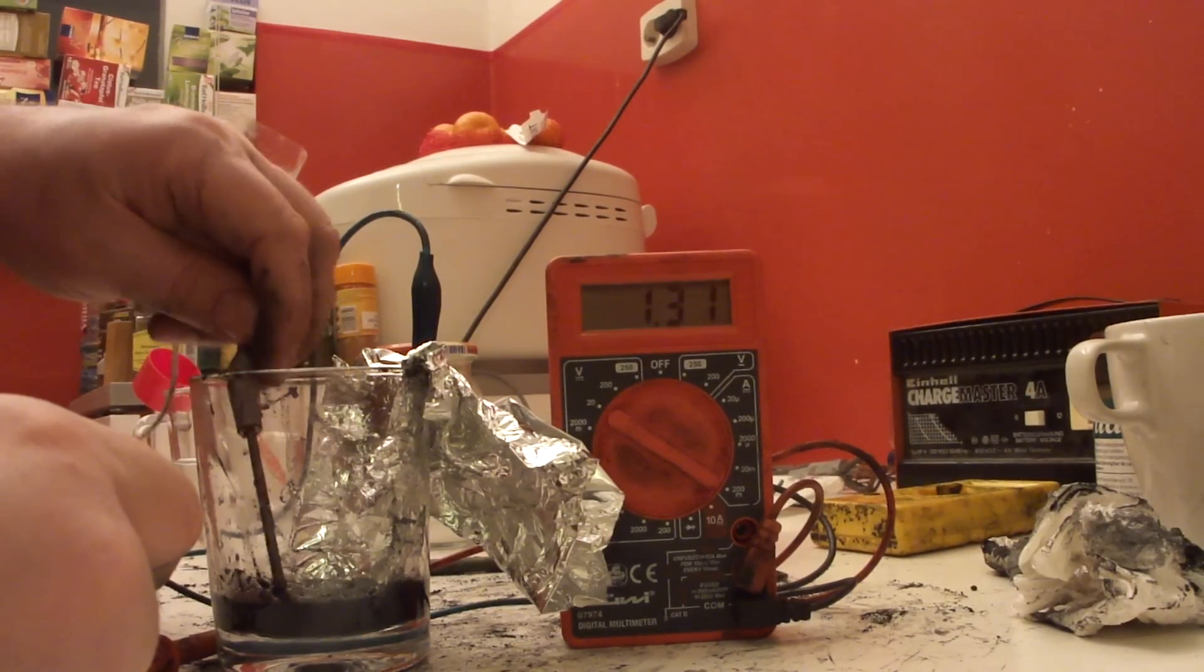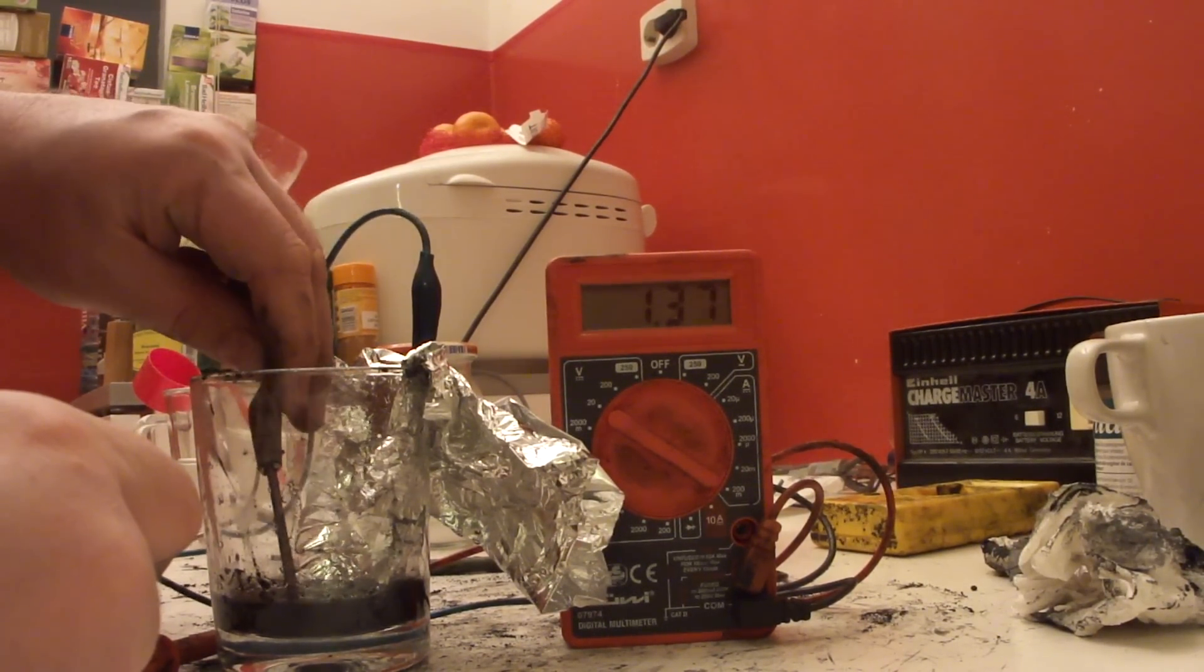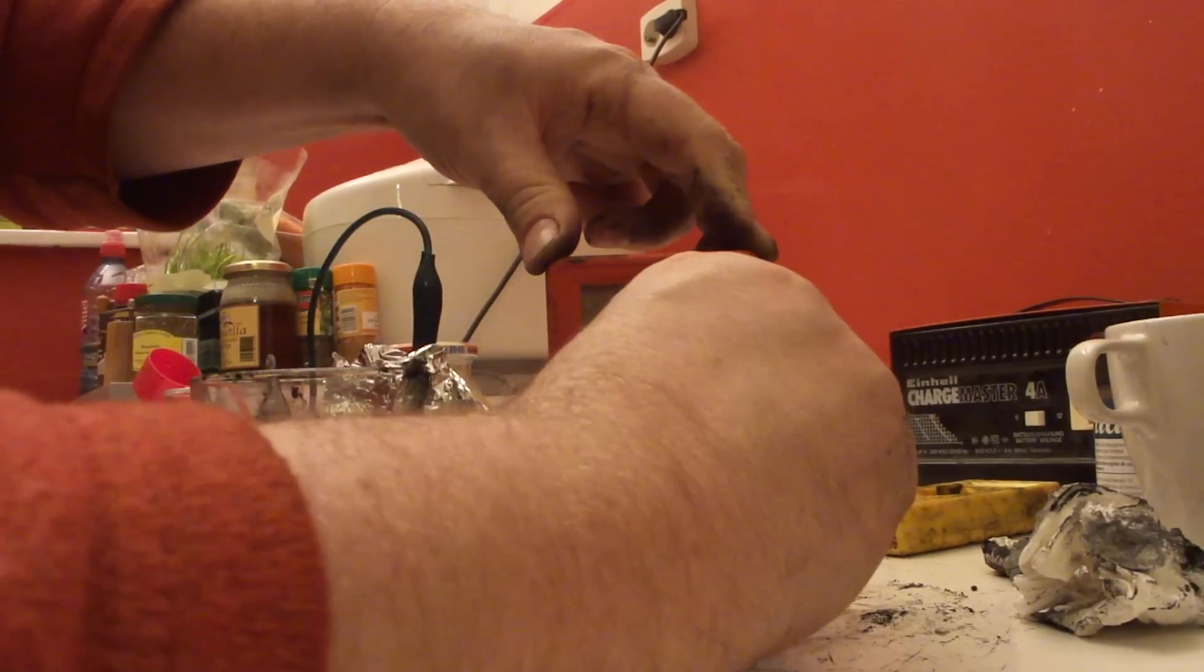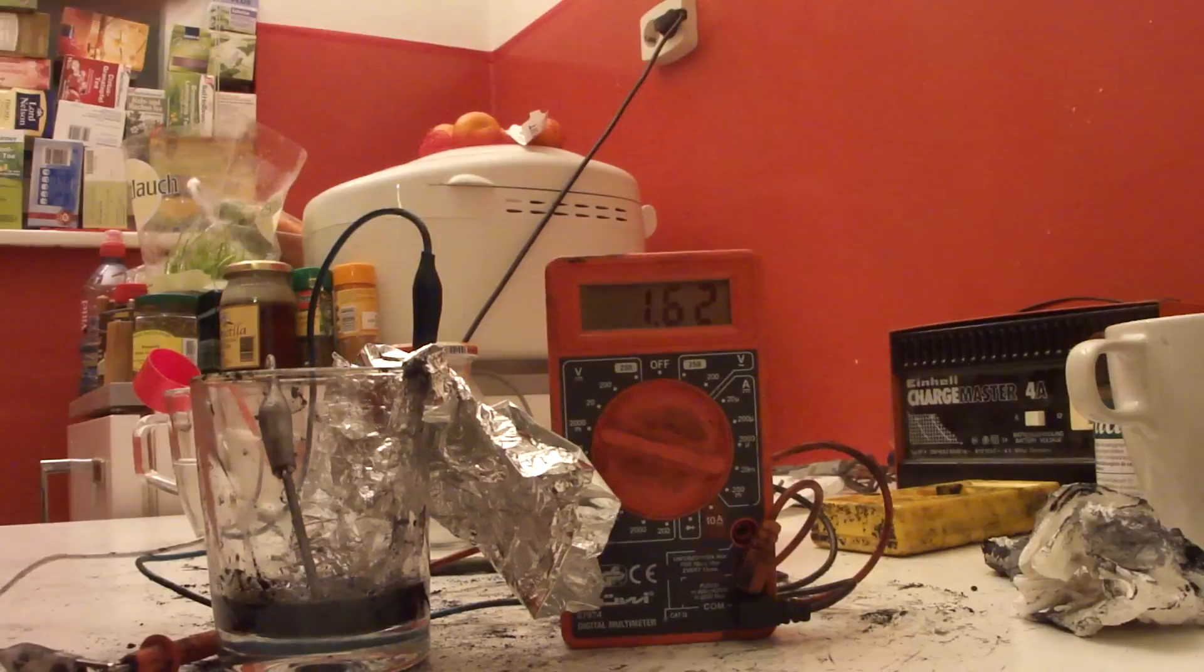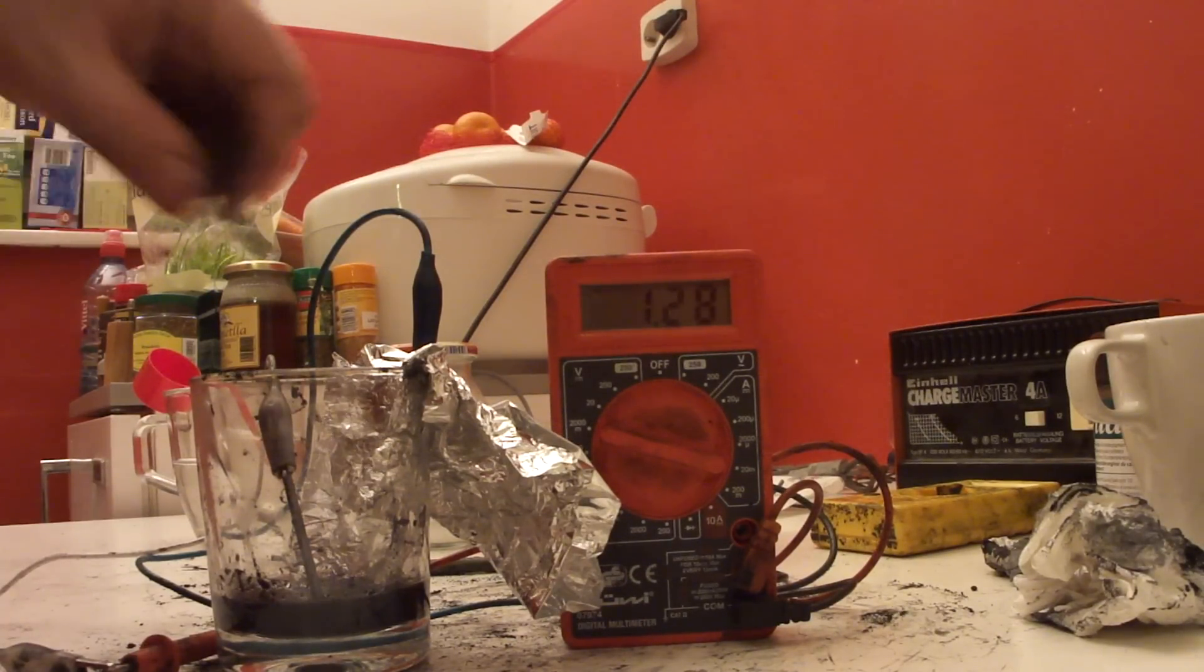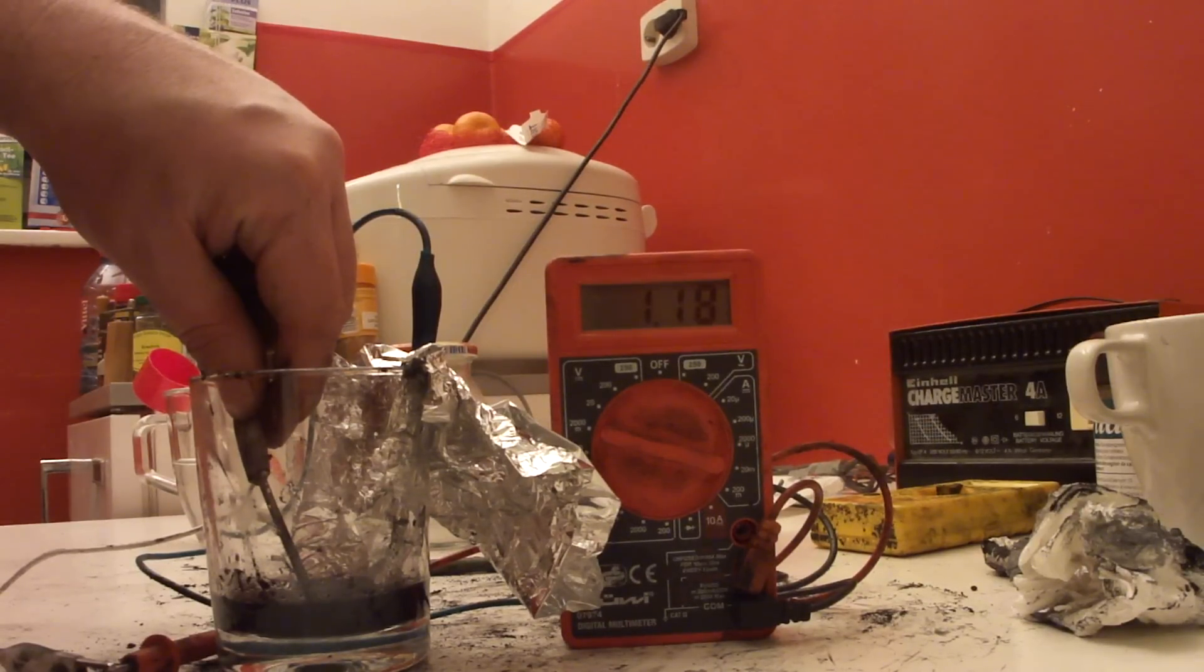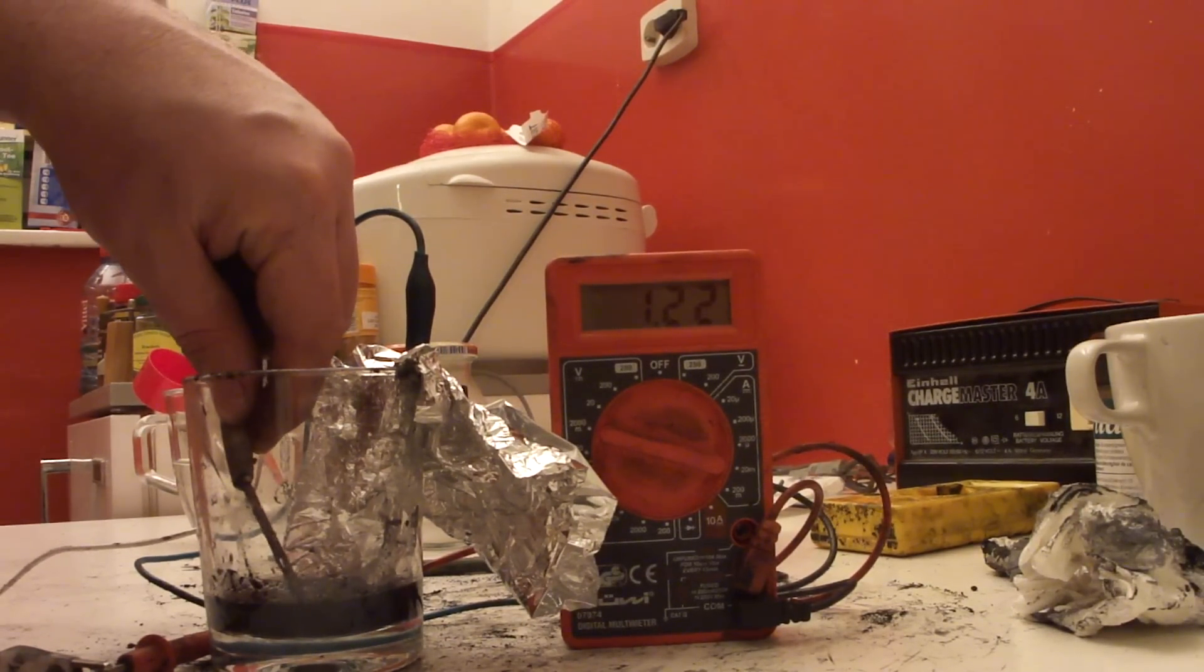Let's see what current is here. I have to be careful that I don't make a short circuit now. I'm now on the 20 milliamp setting. You can see that with such a small electrode here there's already 1.22 milliamps, so it's not bad.